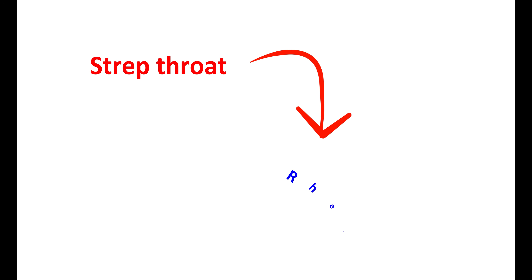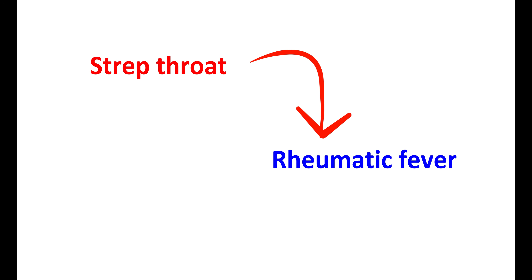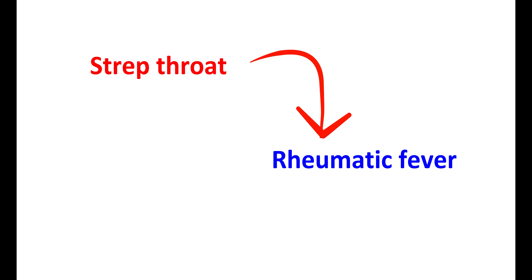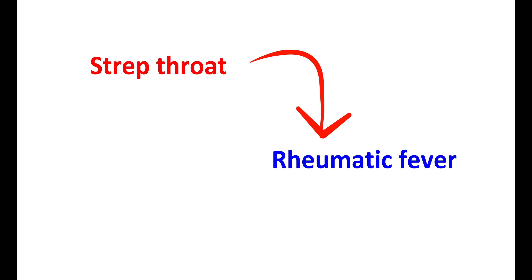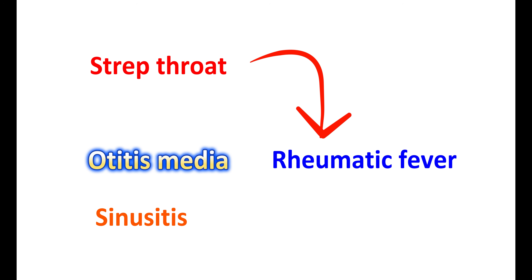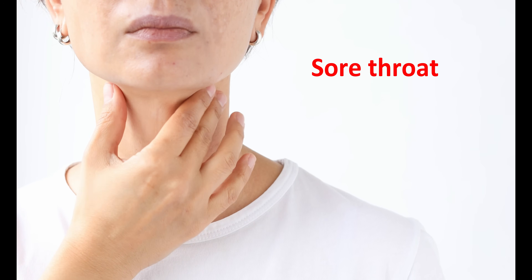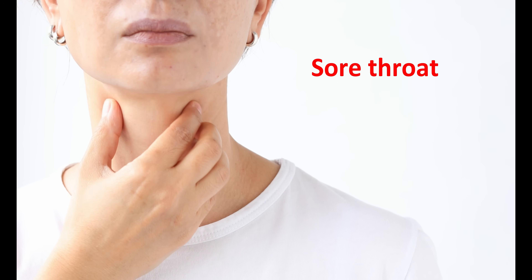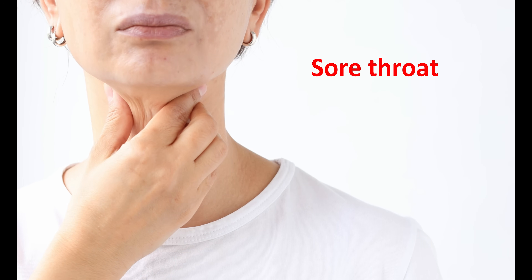If untreated, strep throat can be converted into rheumatic fever. It can also develop into scarlet fever, producing a fine sandpaper-like rash. If strep throat is untreated, it may develop into other infections — it may affect the ear, leading to otitis media, or it can also develop into sinusitis. Due to the immune response, it may also develop into acute rheumatic fever and scarlet fever. The inflammation of the pharynx can produce a sore throat, a burning sensation in the throat, along with difficulty swallowing, and must also develop a fever.